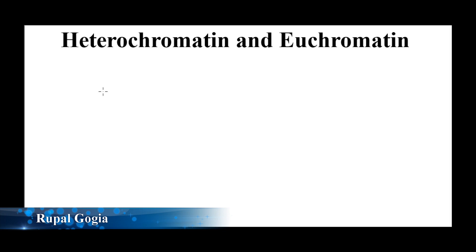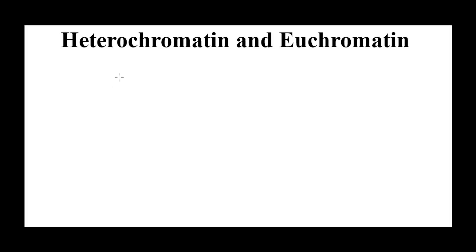Welcome back. In the last video we talked about histone modification and how histone acetylation helps in decondensation of DNA so that it can be transcribed and gene expression can take place. In a previous video we spoke about X chromosome inactivation, where one active X chromosome in females undergoes inactivation and becomes transcriptionally inactive. We also spoke about chromosome condensation — how chromatin is condensed to form a chromosome — DNA packaging. Keeping all these things in the background, we are ready to understand heterochromatin and euchromatin.